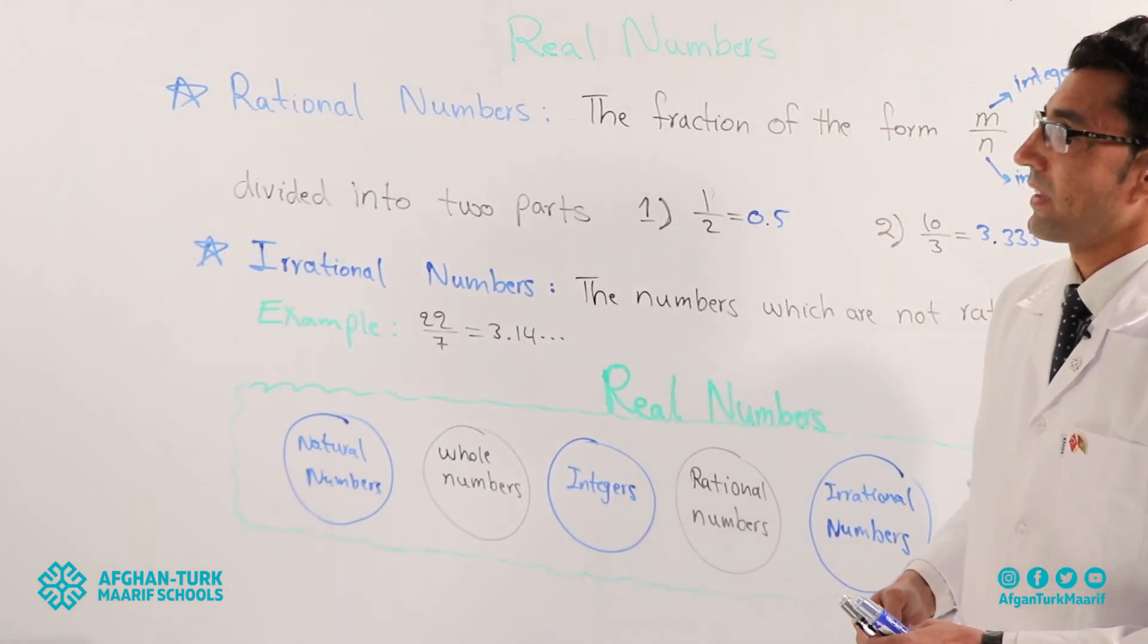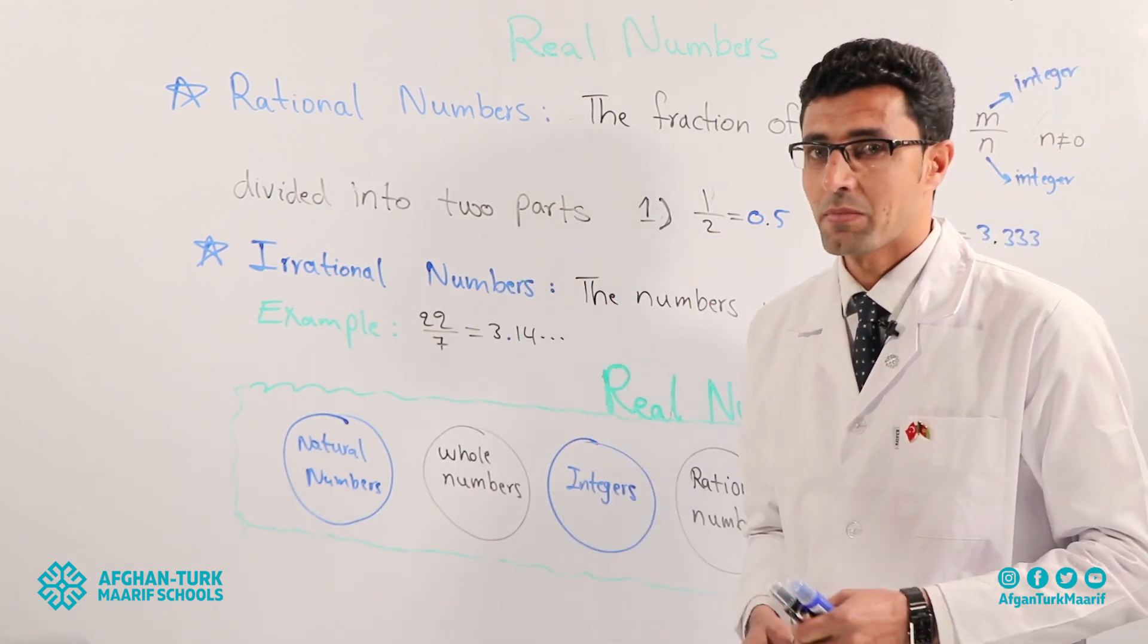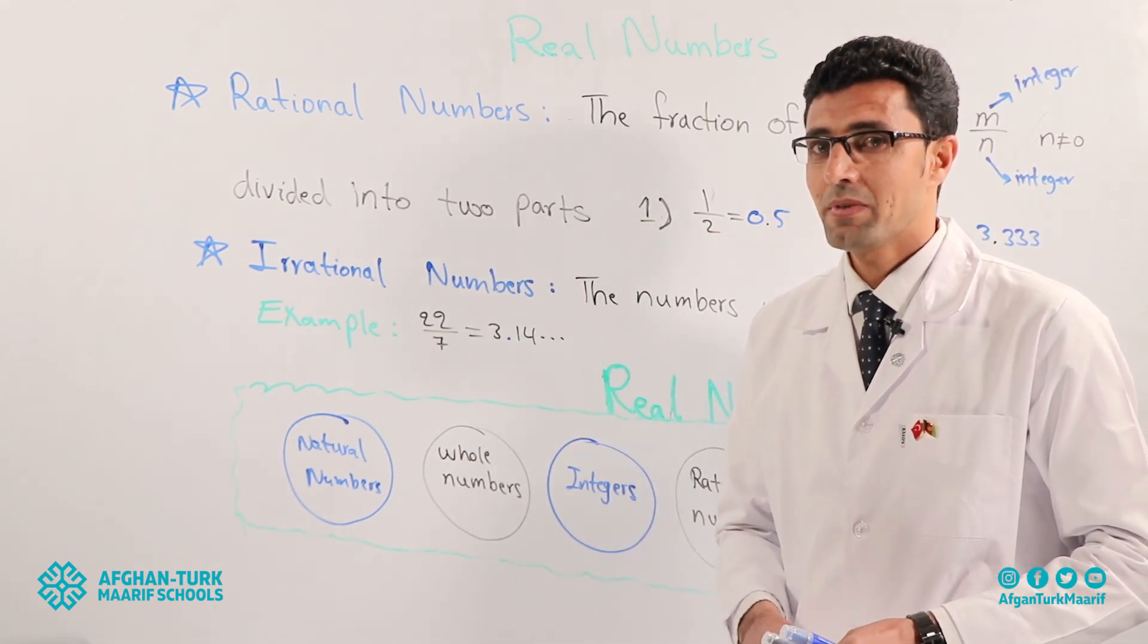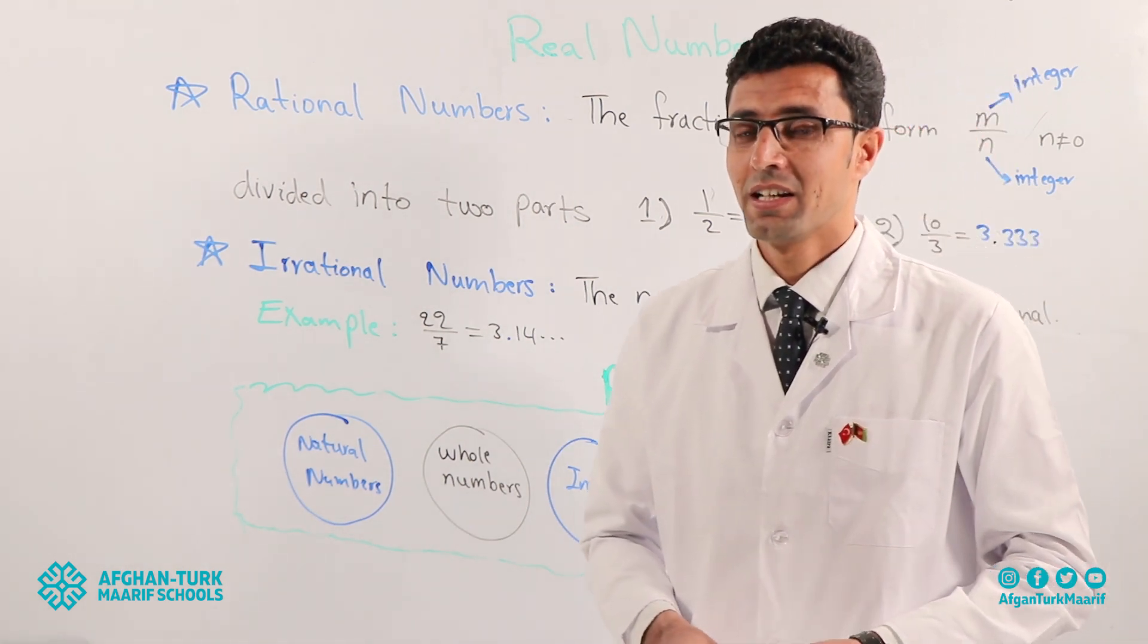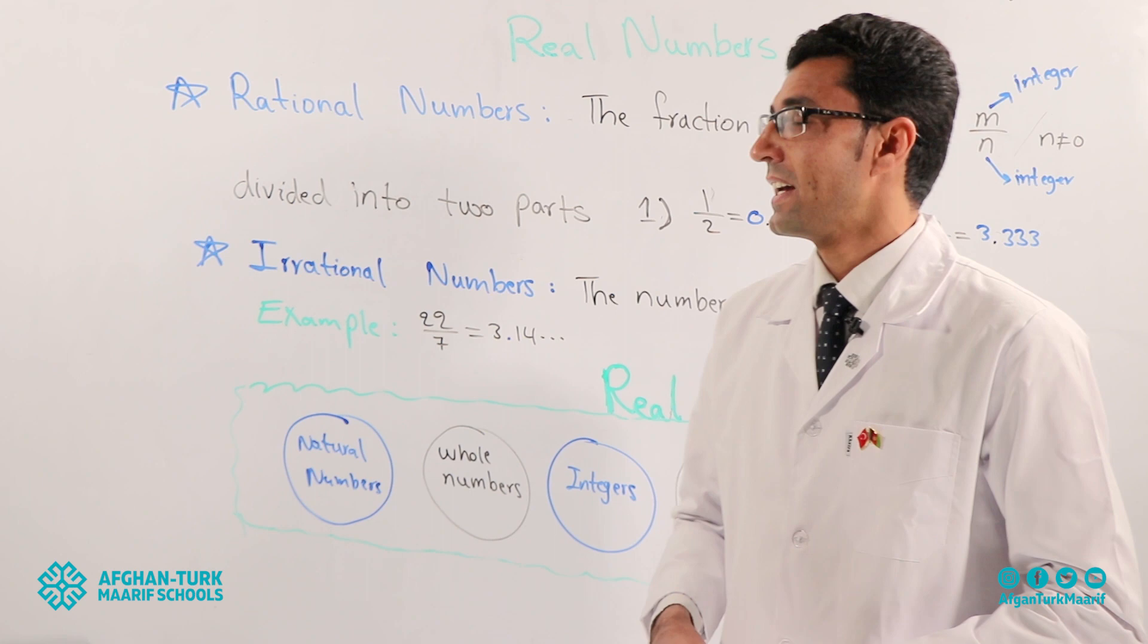How do we show? Z is equal to this. Okay. Now. We studied three types of numbers. Natural numbers. What else? Yes. Whole numbers. And the next. Integers. Now we start rational numbers.